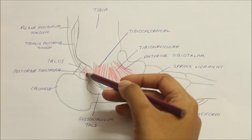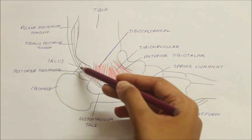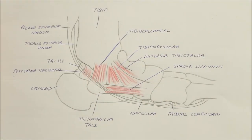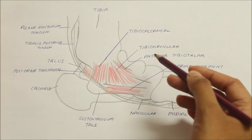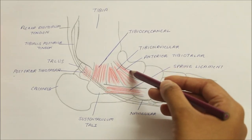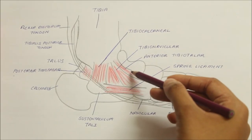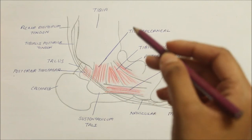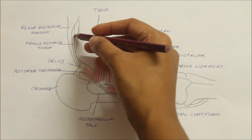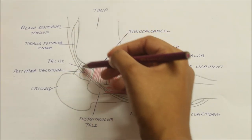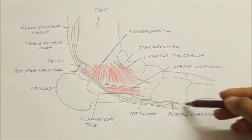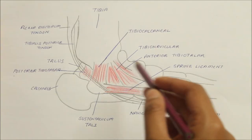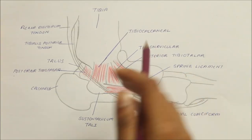The posterior fibers or the posterior tibiotalar ligament are attached to the medial tubercle of the posterior process of the talus bone. The deep part of the deltoid ligament, or the anterior tibiotalar ligament, is attached to the anterior part of the medial surface of the talus bone. The deltoid ligament as a whole is crossed by the tendons of the tibialis posterior and the flexor digitorum longus. Being a very strong ligament, excessive tensile forces on it result in avulsion fracture.